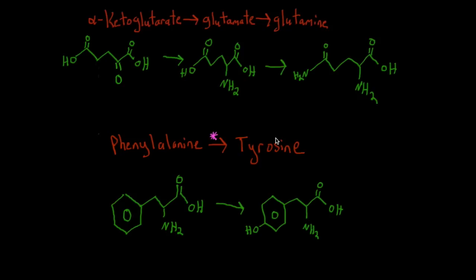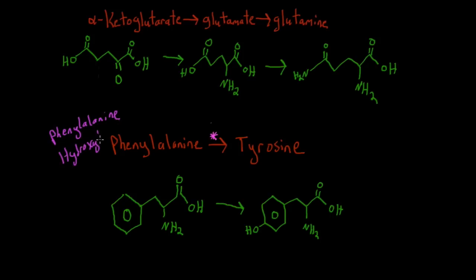If you remember, this happens in urea poisoning — all of our alpha-ketoglutarate ends up transferred into glutamate and glutamine because there's too much urea, placing all the nitrogens onto these molecules as we try to maintain alpha-ketoglutarate levels. To go from phenylalanine to tyrosine, you simply add a hydroxyl group to the benzene ring. However, the enzyme responsible — phenylalanine hydroxylase — if it's deficient, this is how you get phenylketonuria (PKU). In that case, you can't metabolize phenylalanine at all, and its buildup is very toxic, causing epilepsy, gait disturbances, and mental retardation.